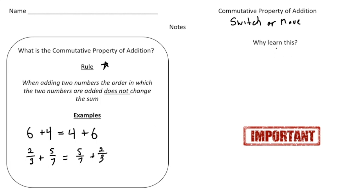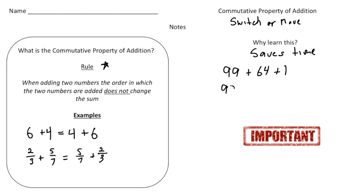So why learn this? This property will actually save you time. Let's say we have the numbers 99 plus 64 plus 1. According to the order of operations, we would have to do 99 plus 64, get that number, and then add 1. But it'd actually be faster if we could add 99 and 1 first — that's 100 — and then add 64. So I can switch around the 64 and the 1, changing the order to 99 plus 1 plus 64. Now we simply add 99 and 1, which is 100, plus 64, and we get our final answer of 164.